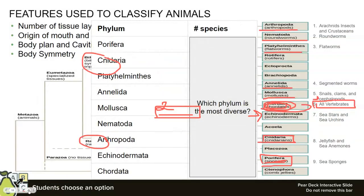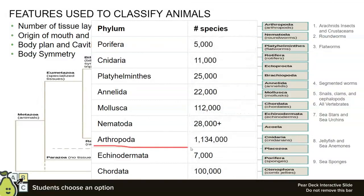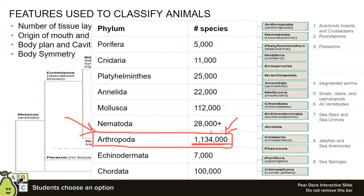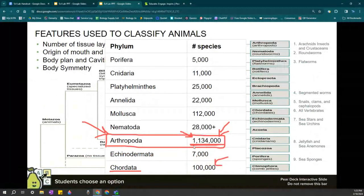Which phylum do you think is the most diverse — meaning which one has the most different species? Is it sea sponges? Is it mollusks, which includes clams, snails, and cephalopods? Or is it chordates, like anything with a vertebra? Actually, it's going to be arthropods. Arthropods are incredibly successful and have many, many diverse species. This includes insects, crustaceans, and arachnids. Chordata has quite a few species but is not nearly as many as Arthropoda.